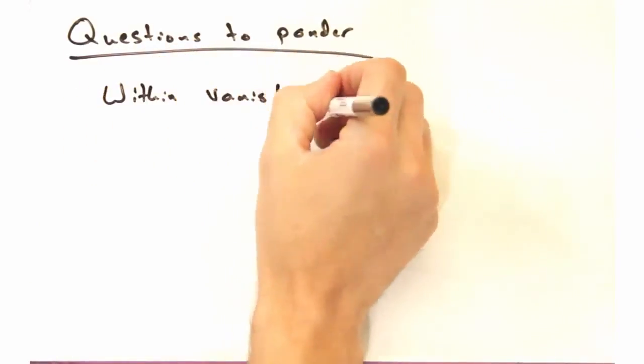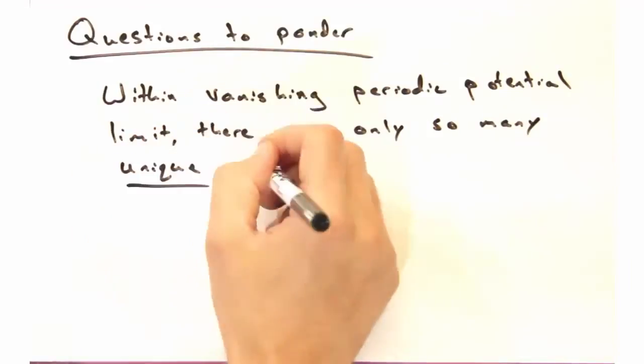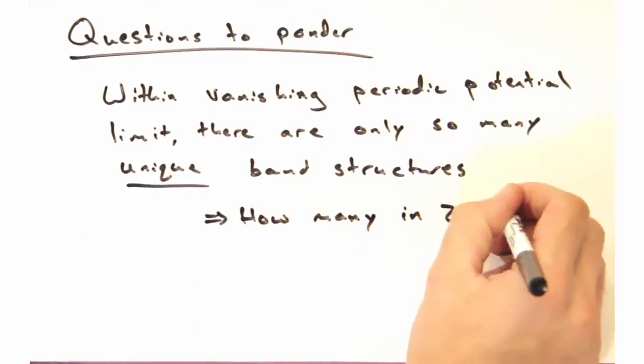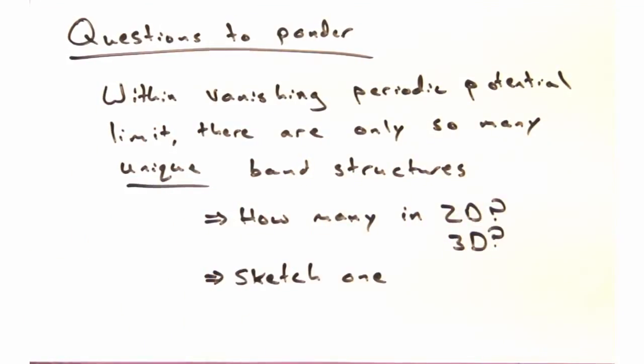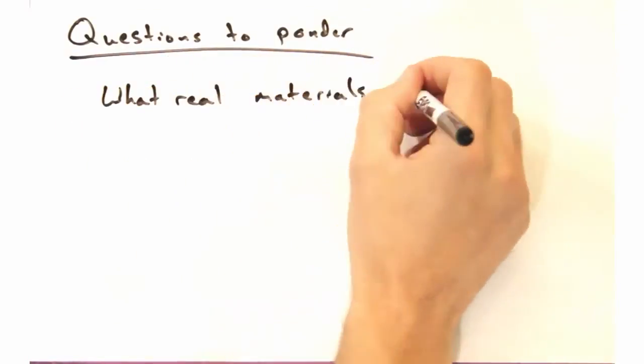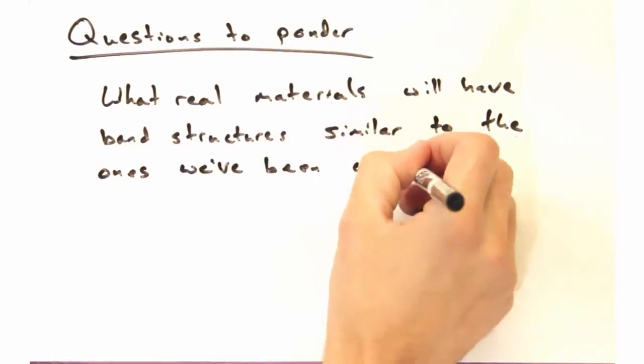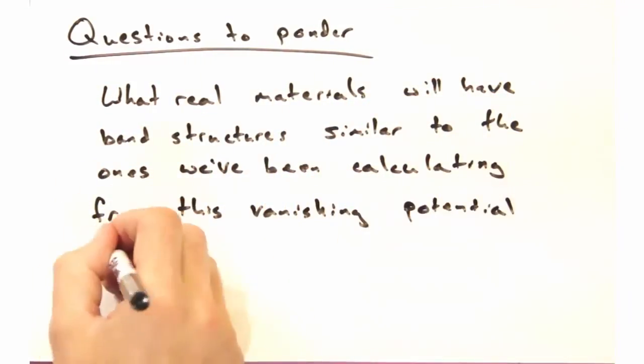And then how about another one? So within this vanishing periodic potential limit, there's only so many unique band structures. How many are there in 2D? How about 3D? Pick one and sketch it for the first few adjacent parabolas. And what real materials do you think will have band structures that are similar to the ones calculated from the vanishing potential?